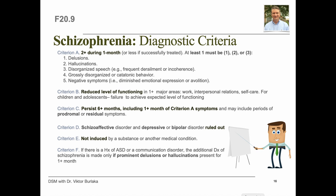Criterion B deals with significantly disturbed functioning across school, work, relationships with other people, and self-care. When schizophrenia starts during childhood or adolescence, we can observe failure to achieve the expected level of interpersonal, academic, or occupational functioning. Criterion C requires continuous signs of the disturbance to persist for at least six months, including at least one month of Criterion A active phase symptoms, and may include periods of prodromal or residual symptoms — manifested by negative symptoms or attenuated forms of Criterion A symptoms such as odd beliefs or unusual perceptual experiences.